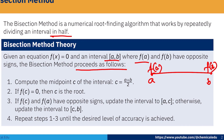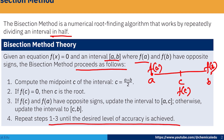First, compute the midpoint c, where c = (a + b) / 2. If f(c) = 0, then c is the root of the equation. If f(c) and f(a) have opposite signs, then the root lies between c and b. Repeat steps 1 to 3 until the desired accuracy is achieved.